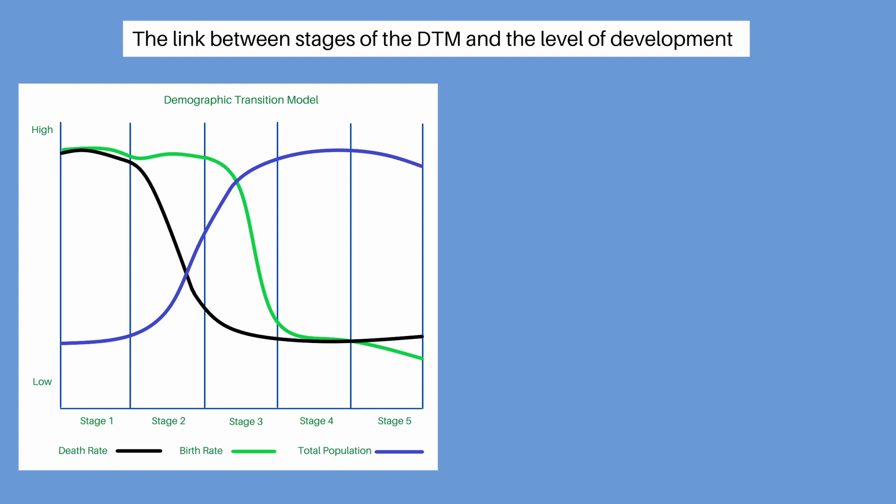In stage 1, the birth rate and death rate are both high. They may fluctuate because of disease, war and famine, but the population total remains fairly stable. With few resources, people need more children to support their future. The level of development is very low and much of the work is done by hand. Having more children will increase the amount of work that can be accomplished by a family.